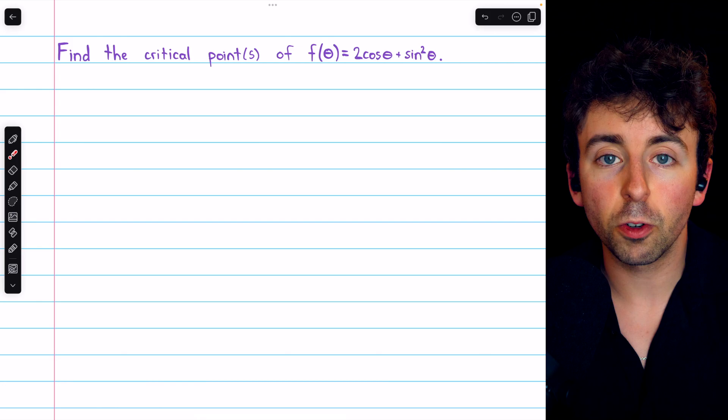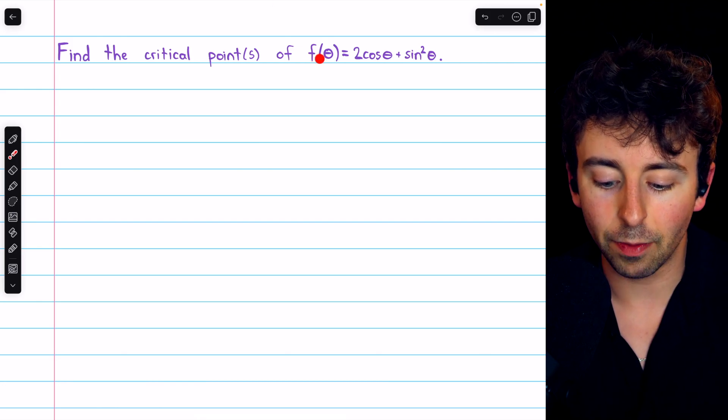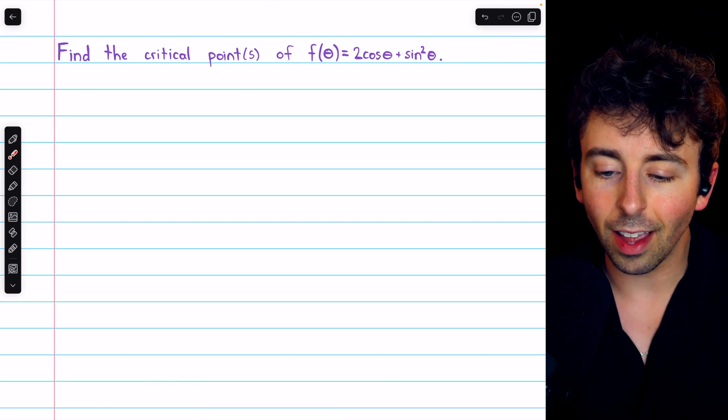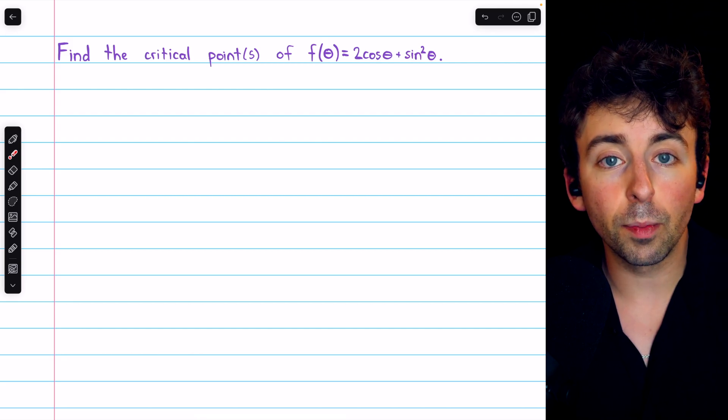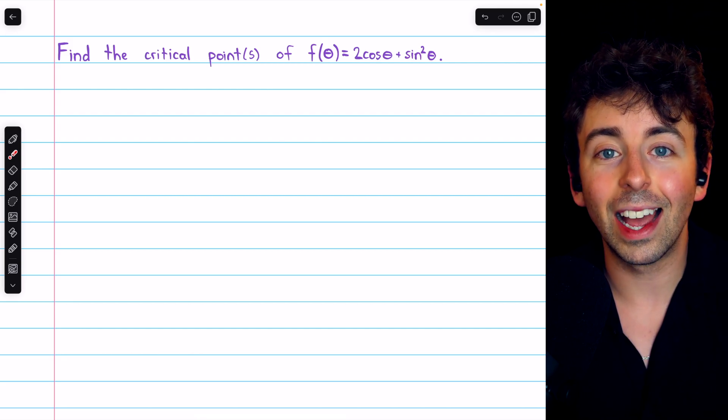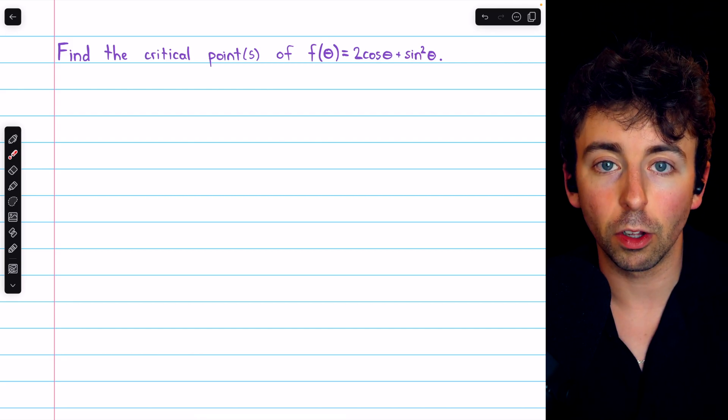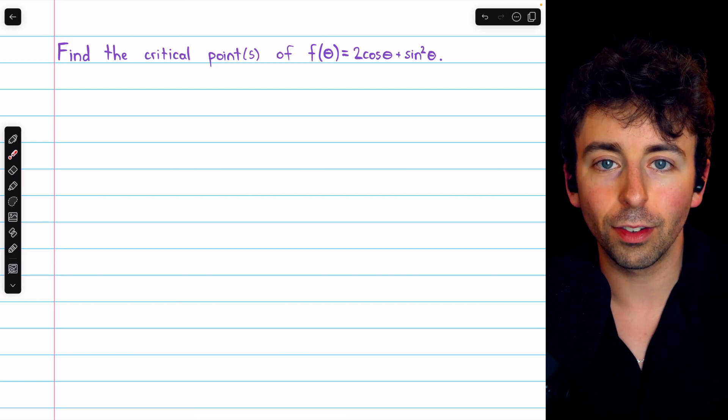Here's one more example to try with some trig functions: f(θ) = 2cos(θ) + sin²(θ). Unlike the previous examples, this one has infinitely many critical points.